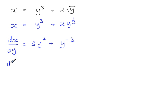So dy by dx, the gradient of the curve and the gradient of the tangent to the curve, is 1 over dx by dy. So it's 1 over 3y squared plus y to the power of minus a half.